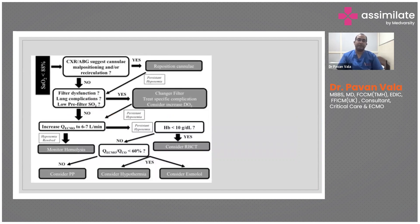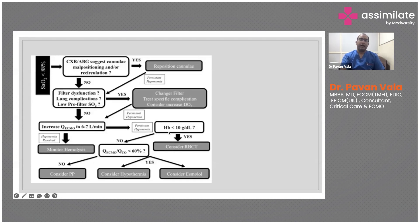The algorithm for managing hypoxia on ECMO: first check for cannula malposition or recirculation and reposition if needed. Then look for filter dysfunction or lung complications such as pneumothorax — change the filter if indicated. Then increase ECMO flow up to 7 L/min, though this is rarely done due to hemolysis risk. Also consider increasing hemoglobin to address anemia-related hyperdynamic circulation. If none of this works, consider hypothermia, esmolol, or accepting a lower oxygen level.